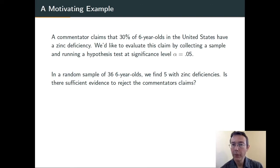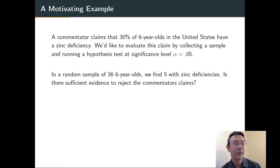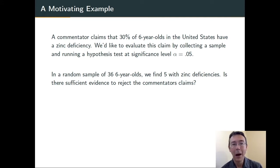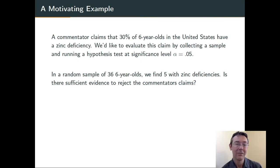A commentator claims that 30% of 6-year-olds in the United States have a zinc deficiency. We'd like to evaluate this claim by collecting a sample and running a hypothesis test at level alpha equals 0.05. So we go out, we talk to 36 6-year-olds, and we find 5 with zinc deficiencies.